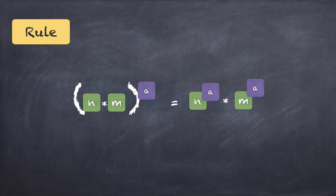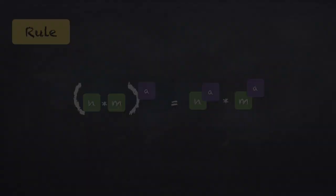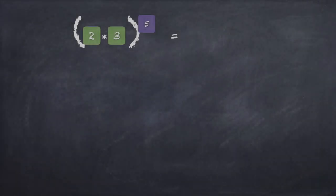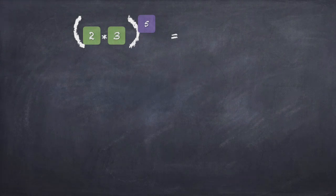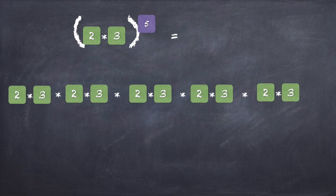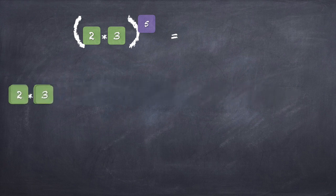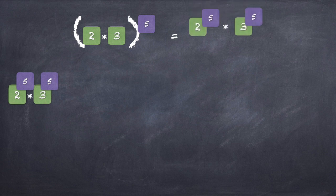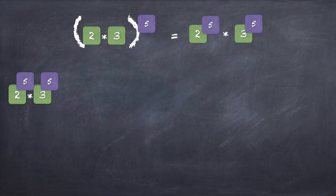The last law: when there are two different bases n and m, both inside a bracket and raised to a, the result is n raised to a into m raised to a. Let's verify with an example. Say you have 2 into 3 raised to the power of 5. Replace 2 into 3 with a symbol Z. It becomes Z into Z into Z five times, which means 2 into 3 repeated five times. Separating the 2s and the 3s: there are five 2s and five 3s, so finally it is nothing but 2 raised to 5 into 3 raised to 5.